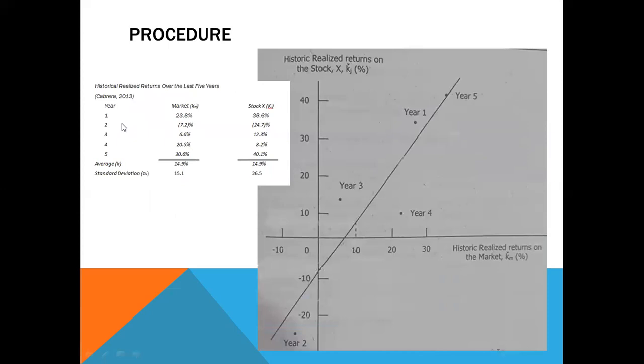For year one, we have here the x-axis—that's the historic realized returns on the market—and the y-axis, that's the historic realized returns on the stock X. So for year one, for the x-axis which is the market, that's 23.8 percent, so somewhere here. For y, that's 38.6 percent, so somewhere here. That's why year one is here. For year two, that's negative 7.2 percent in the market, so somewhere here negative seven, and then for the stock X, for the y-axis, that's negative 24.7 percent, so here. So this is year two.